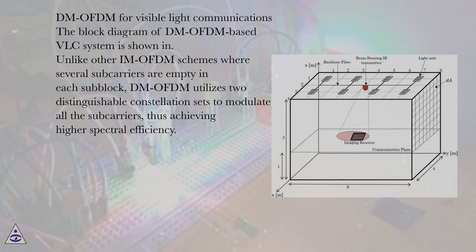DM-OFDM for Visible Light Communications. The block diagram of DM-OFDM-based VLC system is shown. Unlike other IM-OFDM schemes where several subcarriers are empty in each subblock, DM-OFDM utilizes two distinguishable constellation sets to modulate all the subcarriers, thus achieving higher spectral efficiency.